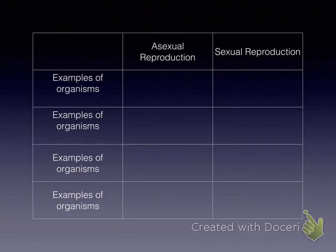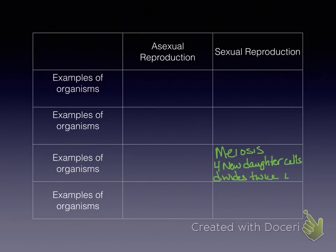Our next term is meiosis. Meiosis occurs only in our sex cells and creates four new daughter cells — meaning there are going to be four cells instead of just one cell copied. It divides twice. We'll talk about that in more detail in the coming weeks.